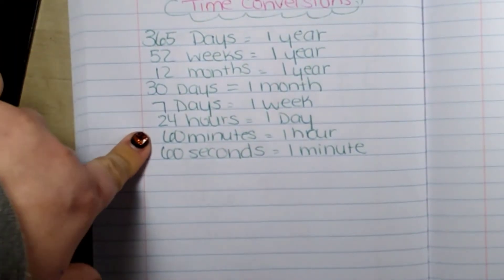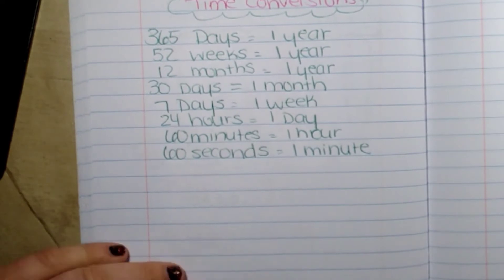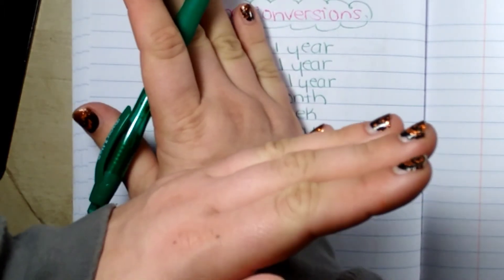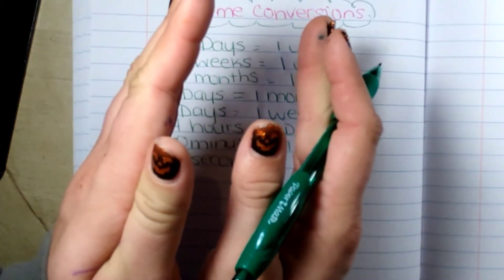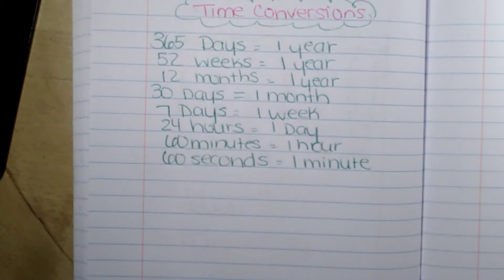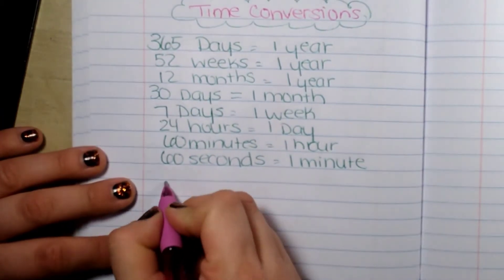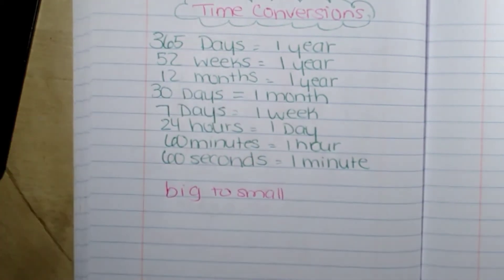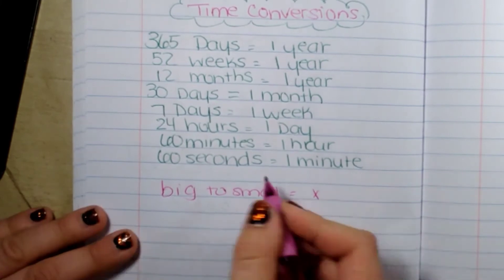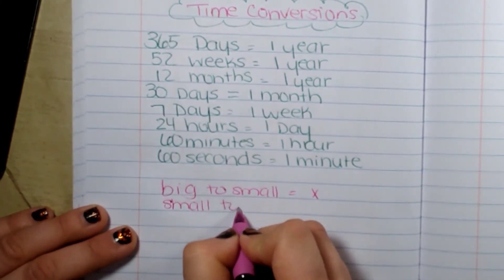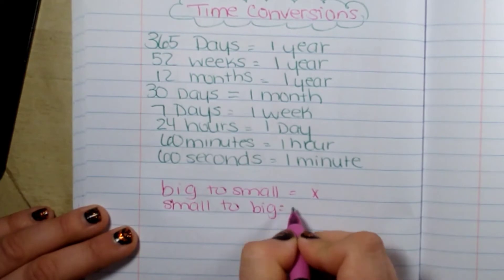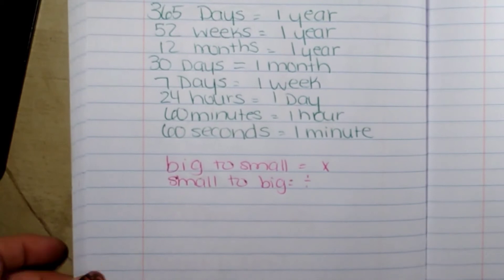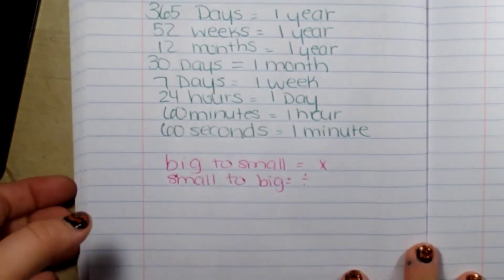So this is something that you should refer to. It is the same exact thing: you start out big, you go small, you cross your hands — that's multiplication. You start out small, you go big — that's division. Same thing. Remember the hand motions I taught you. It is the same thing as when we did capacity, weight, and length in customary.